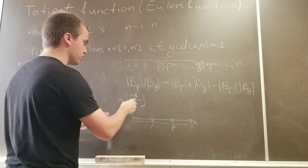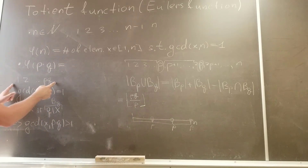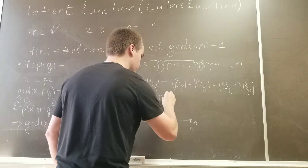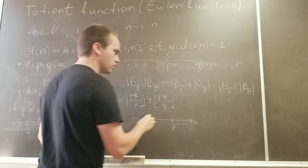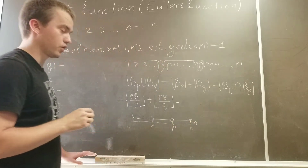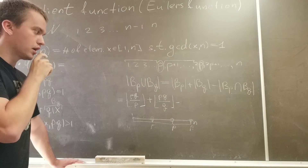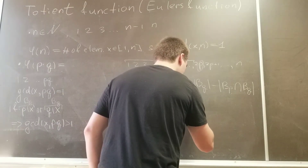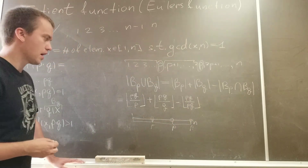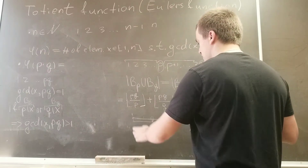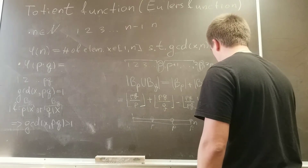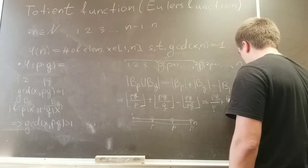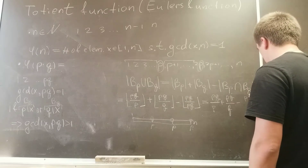Similarly, B(q) is floor(p·q / q), and we subtract the intersection. The intersection of B(p) and B(q) consists of elements divisible by both p and q — that is, divisible by p times q. So the intersection count is floor(p·q / p·q). Putting it all together: floor(pq/p) + floor(pq/q) − floor(pq/pq).